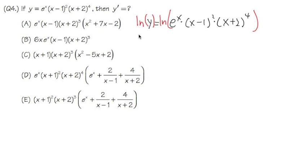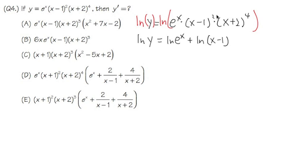On the left-hand side, this is ln y — nothing changed. But on the right-hand side, this will be ln of e to the x, and the product becomes a plus, giving another ln of x minus 1 squared, and then plus another ln of x plus 2 to the fourth power.